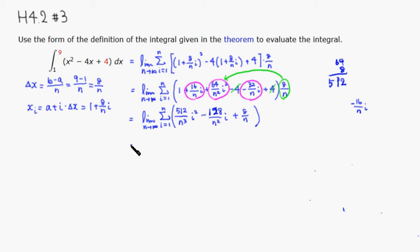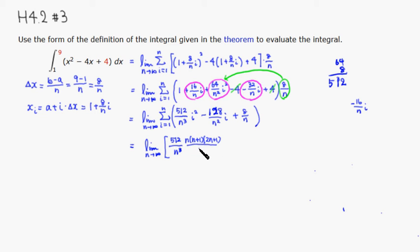Now we apply the summation formulas. We have the limit as n approaches infinity. The coefficient 512/n³ multiplies the formula for Σi², which is n(n+1)(2n+1)/6. Then -128/n² multiplies Σi = n(n+1)/2. And 8/n multiplies Σ1 = n.